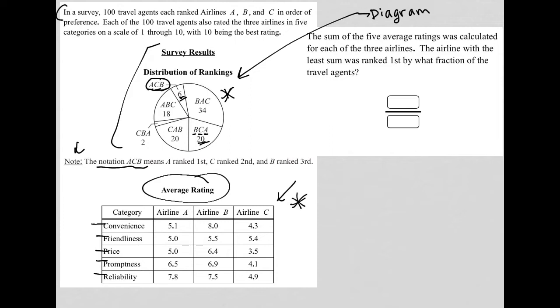So let's look at the question. The question says the sum of the five average ratings was calculated for each of the three airlines. What is that asking us to do? Well, technically, we'd have to just add up everything for airline A, everything for airline B, everything for airline C.